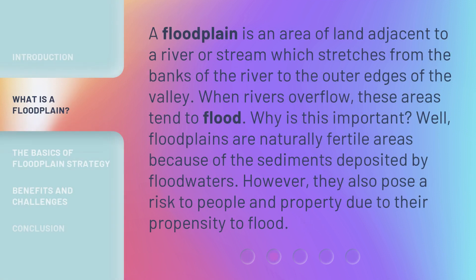A floodplain is an area of land adjacent to a river or stream, which stretches from the banks of the river to the outer edges of the valley. When rivers overflow, these areas tend to flood. Floodplains are naturally fertile areas because of the sediments deposited by floodwaters. However, they also pose a risk to people and property due to their propensity to flood.